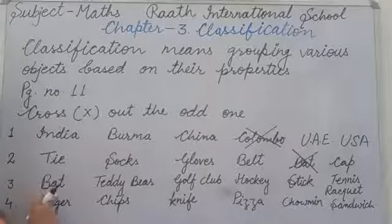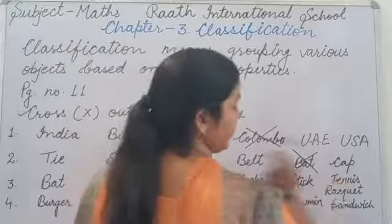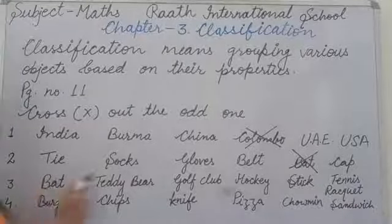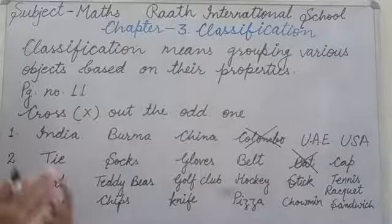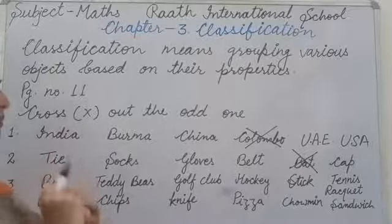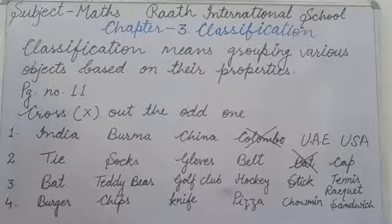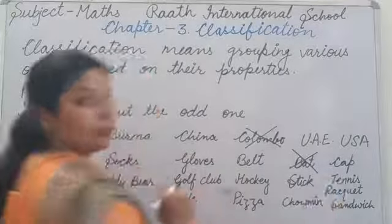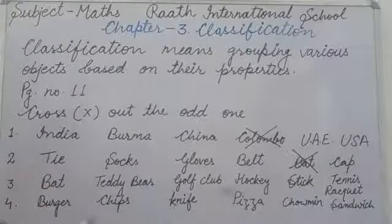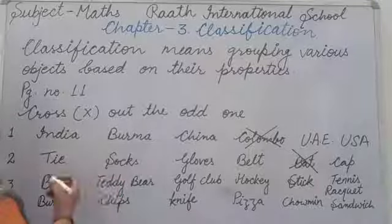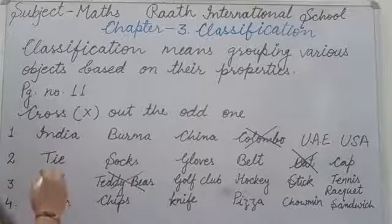Now next is question three: bat, teddy bear, golf club, hockey stick, tennis racket. Hockey stick, tennis racket, and golf club — these are all sports/hard equipment. But teddy bear is a soft toy. So we cross teddy bear. Teddy bear is a soft toy, while the others are sports equipment used to play.